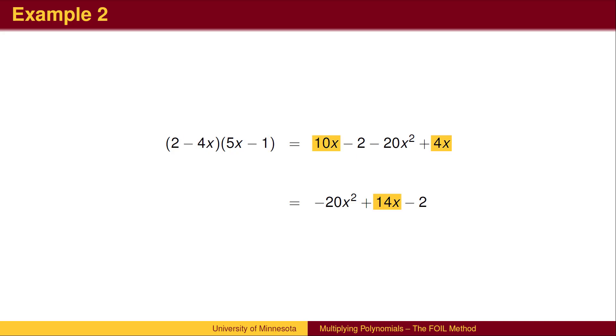Again, we combine like terms to simplify. It is standard to write the answer arranging the terms with the exponent on x in decreasing order. We start with the term with the highest power of x, which in this case is negative 20x squared, then add the term 14x, and finish with the constant.